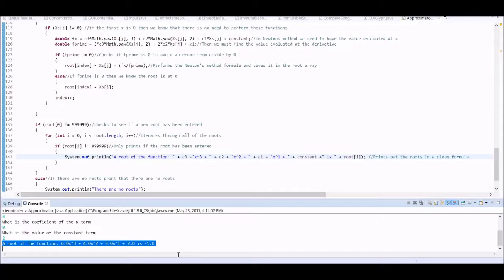As you can see, a root for the function 6x cubed plus 4x squared plus 2 is negative 1.